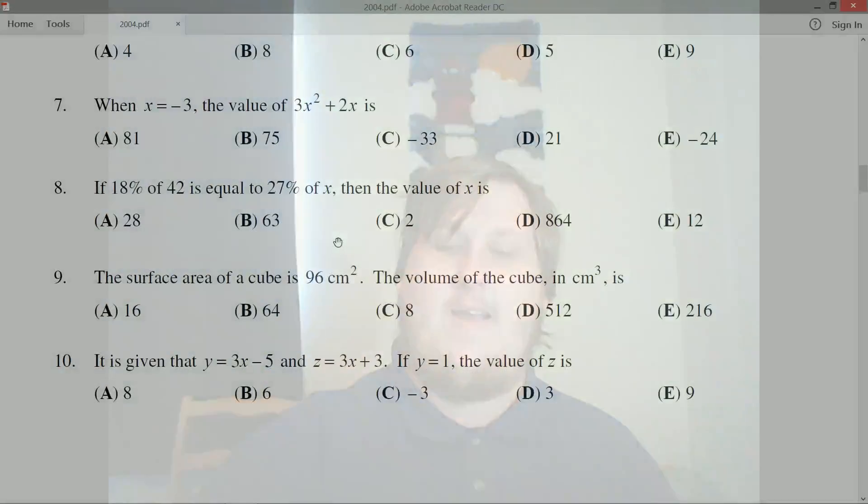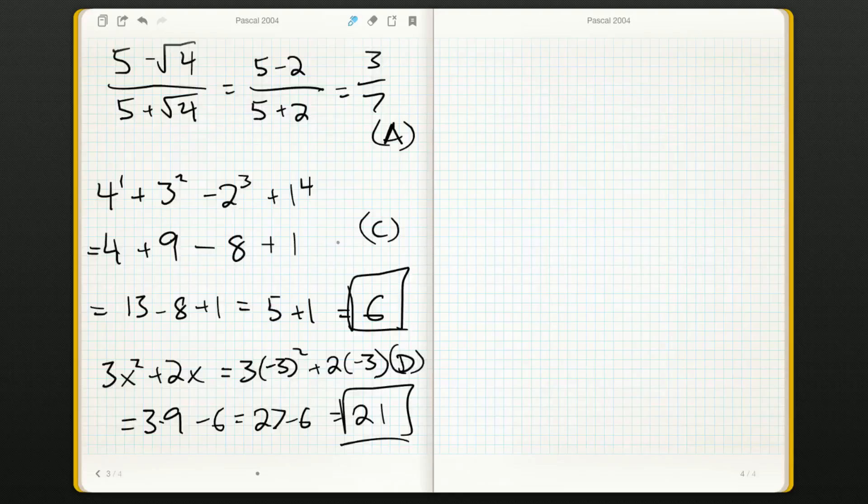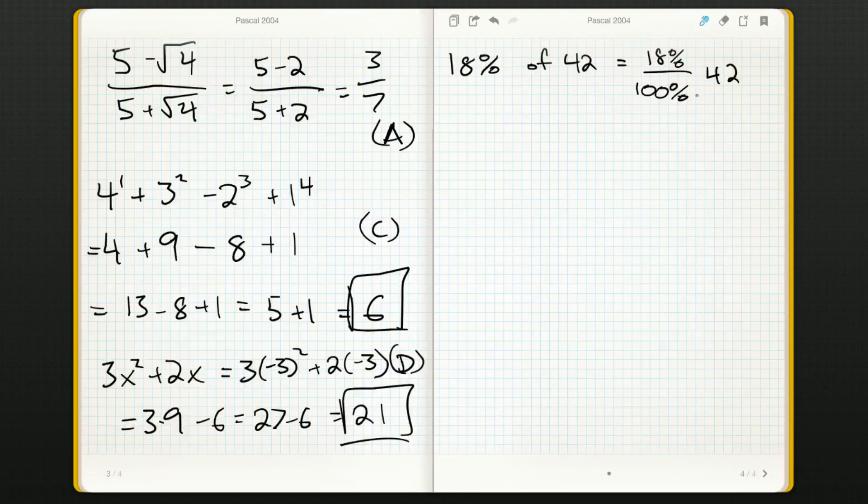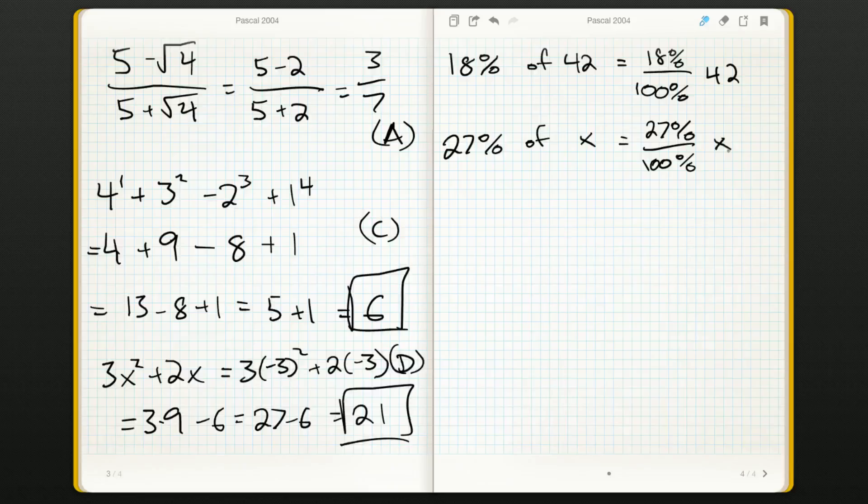So let's set that up: 18% of 42, that's just 18% out of a hundred percent times 42. And we know that this is equal to 27% of x, so that's 27% out of a hundred percent times x.